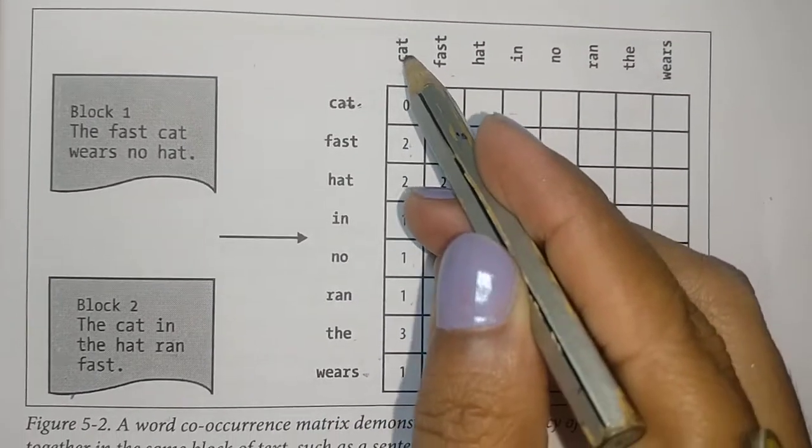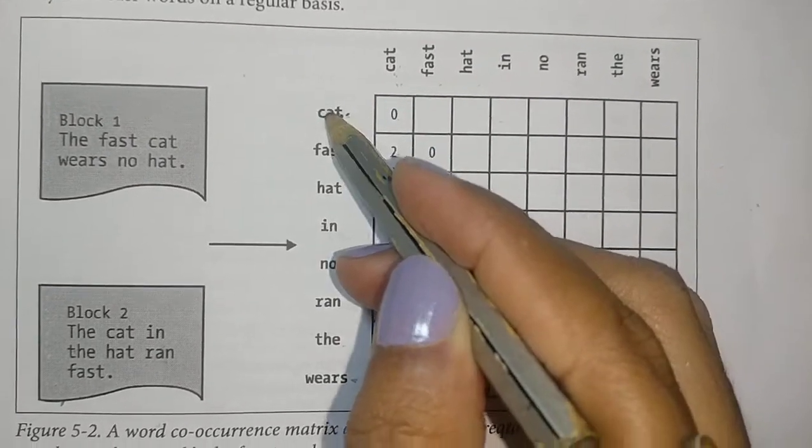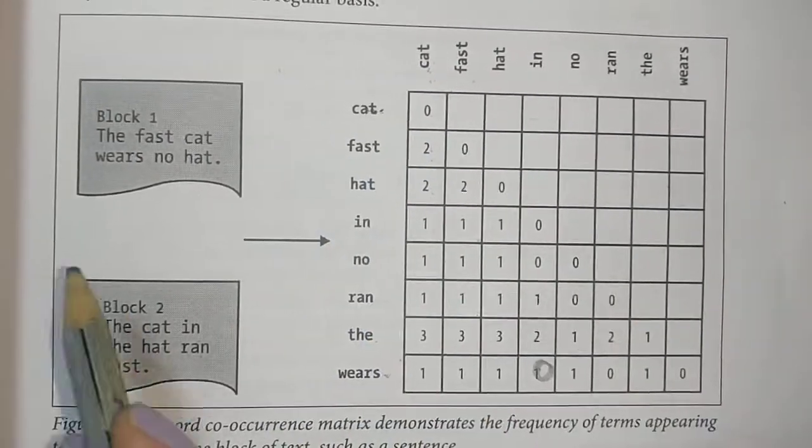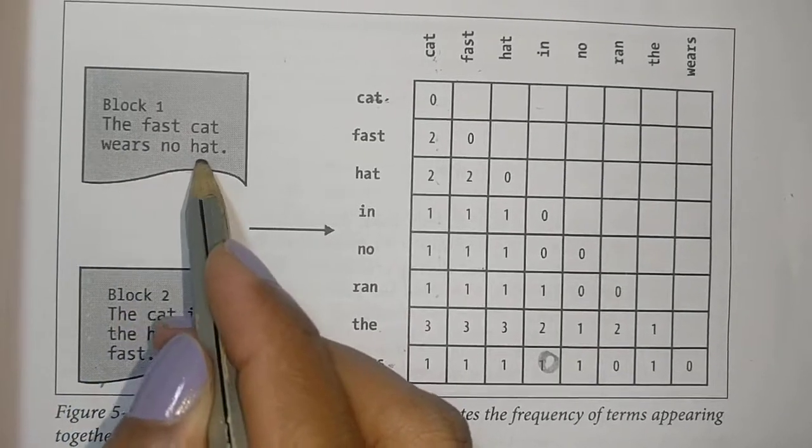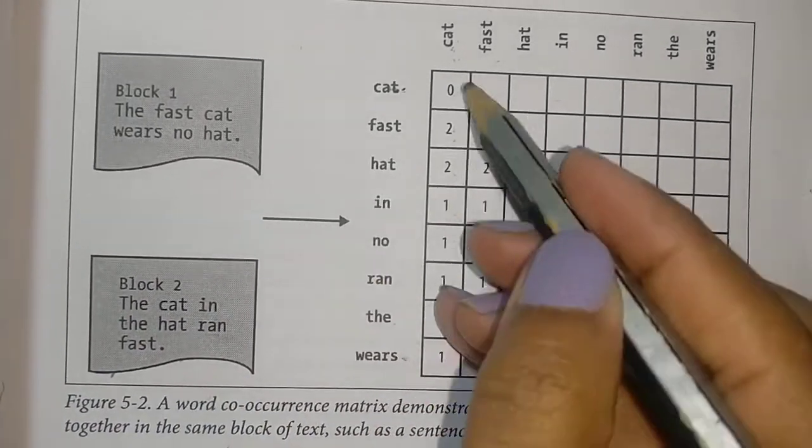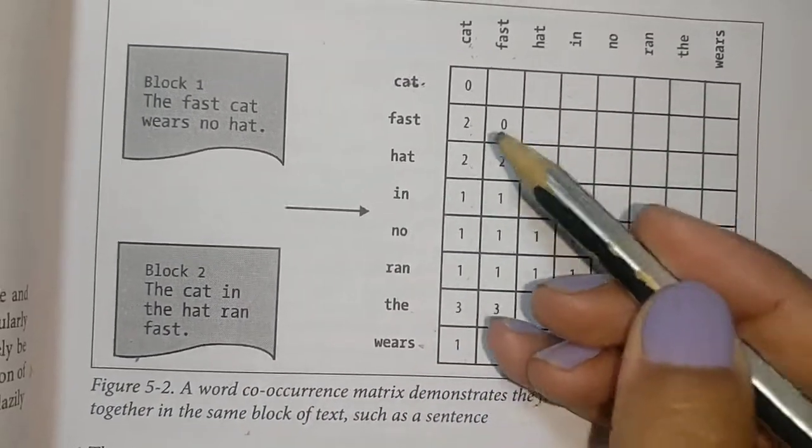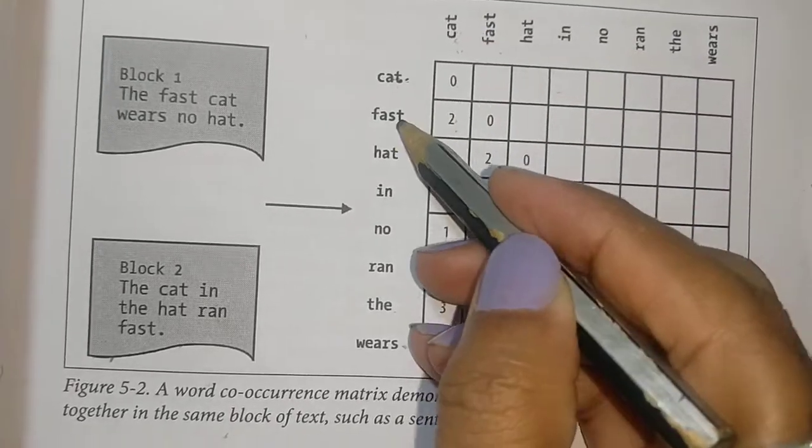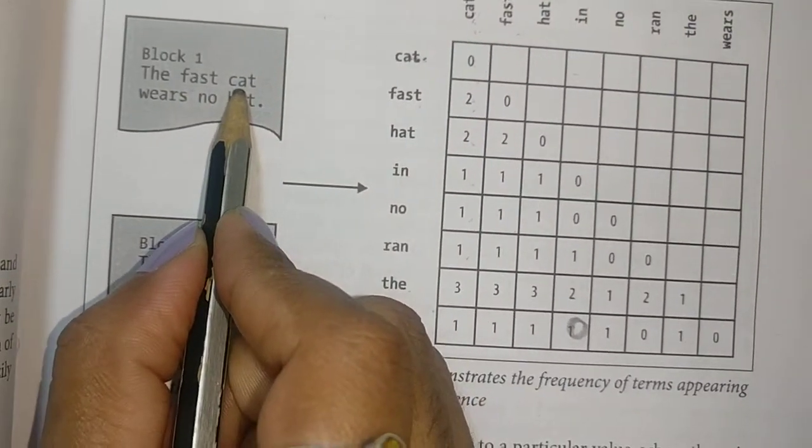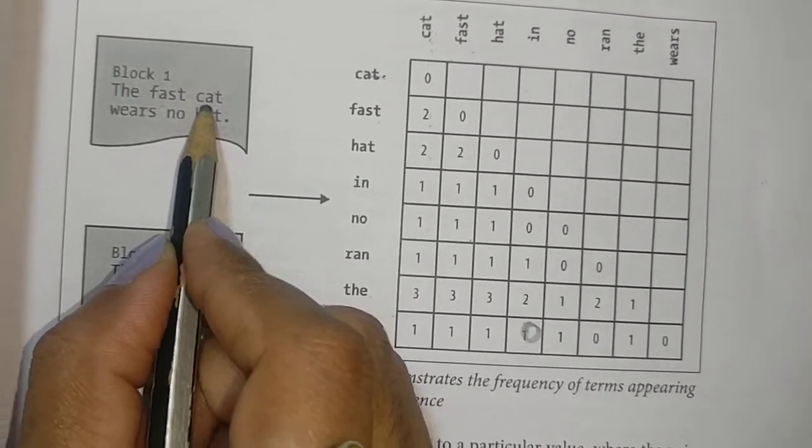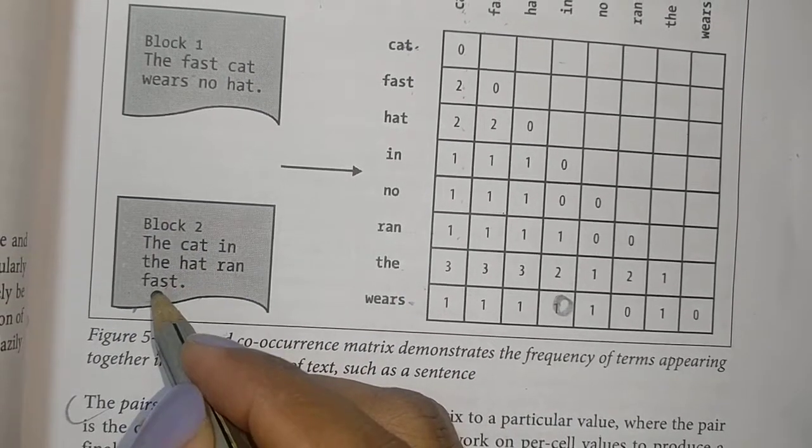First, cat and cat: these two words are not repeated together in the same sentence, so the value is zero. Next, cat and fast: cat and fast occur in the same sentence once here and again here, so the value is two.